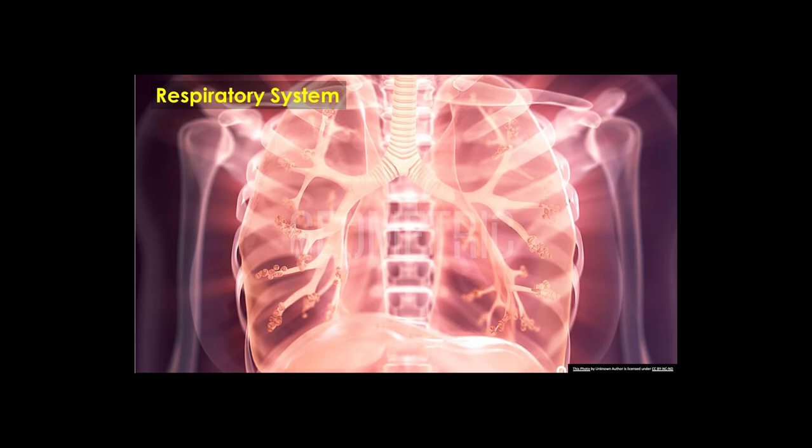We're moving forward into the respiratory system — a little different from the vascular and immune content. Now we're doing breathing stuff. We'll talk about the anatomy, how gases and partial pressures affect our ability to get oxygen to our cells, and how we remove carbon dioxide from our body.